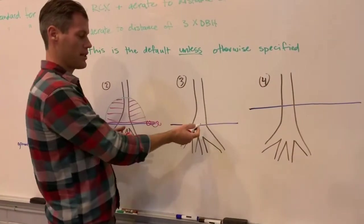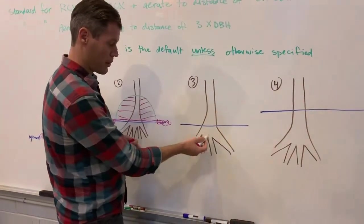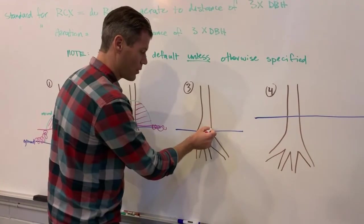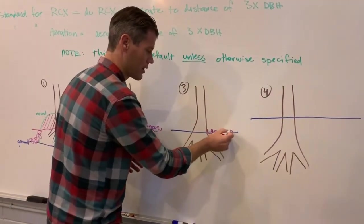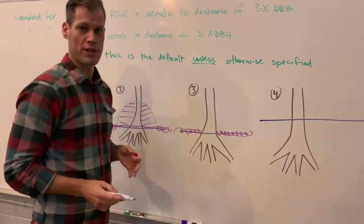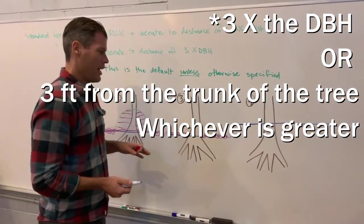In this scenario, there is no buried root collar. I didn't draw this perfectly, but just imagine this is at grade. It's planted properly. And all we're doing here, there's no root collar, it's just aerate to a distance of three times DBH.